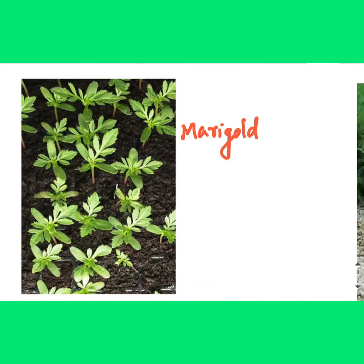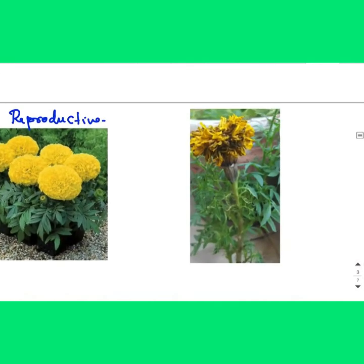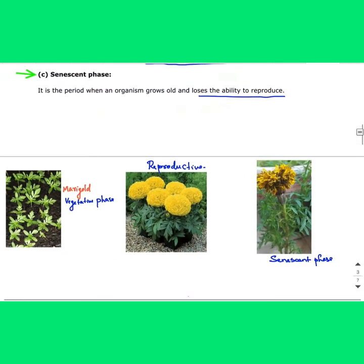Now you see here is a marigold. This marigold is in the vegetative phase. After this, it enters the next phase — the reproductive phase — and starts to produce flowers. And the last phase shown here is the senescent phase. So in marigold we see: vegetative phase, reproductive phase, and senescent phase.